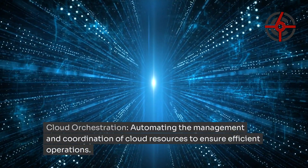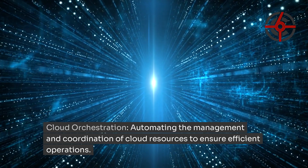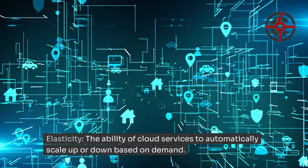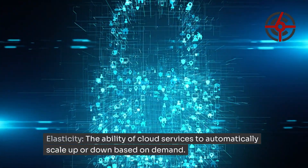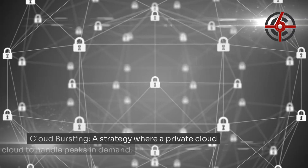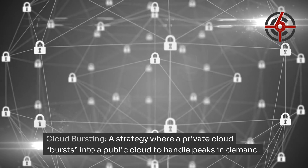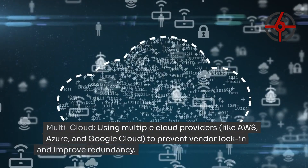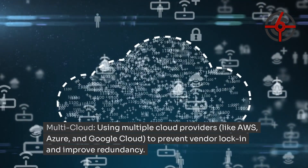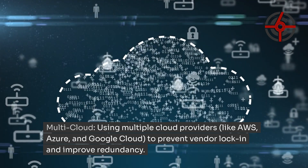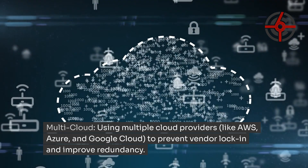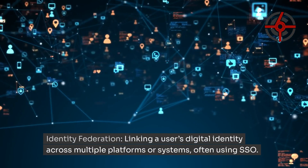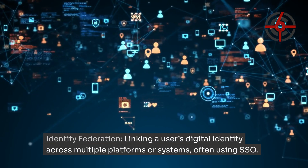Cloud Orchestration: automating the management and coordination of cloud resources to ensure efficient operations. Elasticity: the ability of cloud services to automatically scale up or down based on demand. Cloud Bursting: a strategy where a private cloud bursts into a public cloud to handle peaks in demand. Multi-Cloud: using multiple cloud providers like AWS, Azure, and Google Cloud to prevent vendor lock-in and improve redundancy. Identity Federation: linking a user's digital identity across multiple platforms or systems, often using SSO.